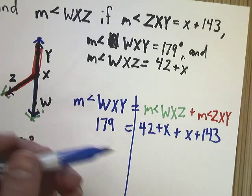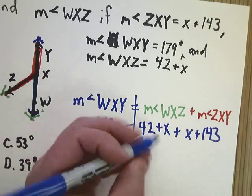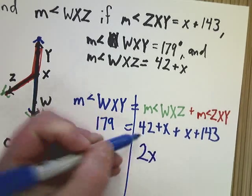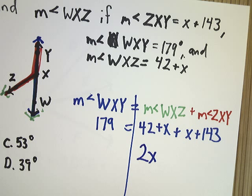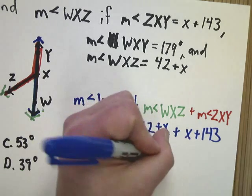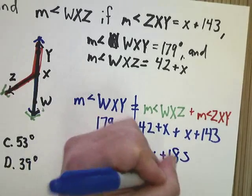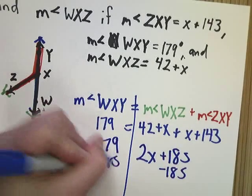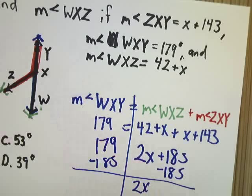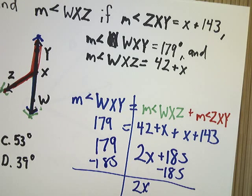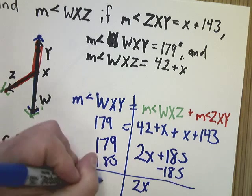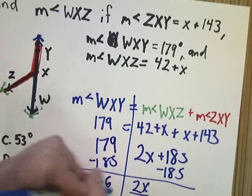Now, from here, it's like clean your room, so you combine like terms. So, I've got two X's there. And then I can add these two together. So, 143 plus 42 is 185. And I bring this down. I subtract 185. Negative 6.